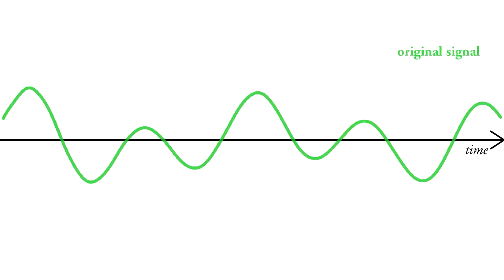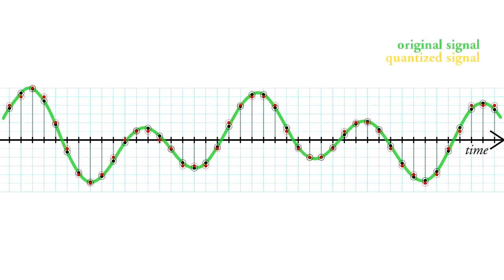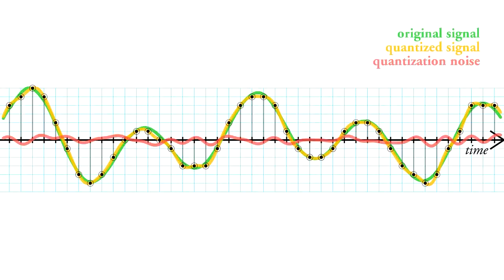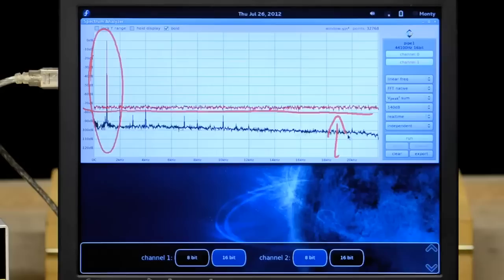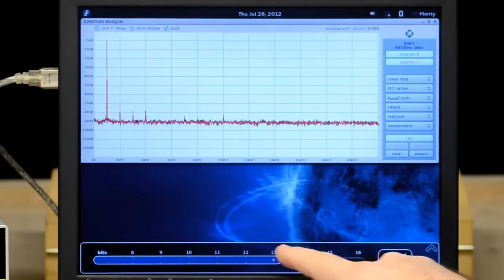When we digitize a signal, first we sample it. The sampling step is perfect. It loses nothing. But then we quantize it, and quantization adds noise. The number of bits determines how much noise, and so the level of the noise floor.